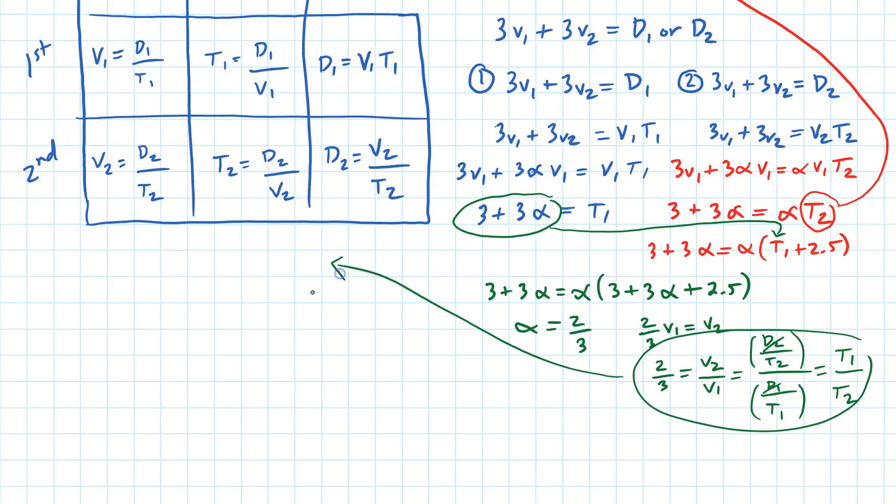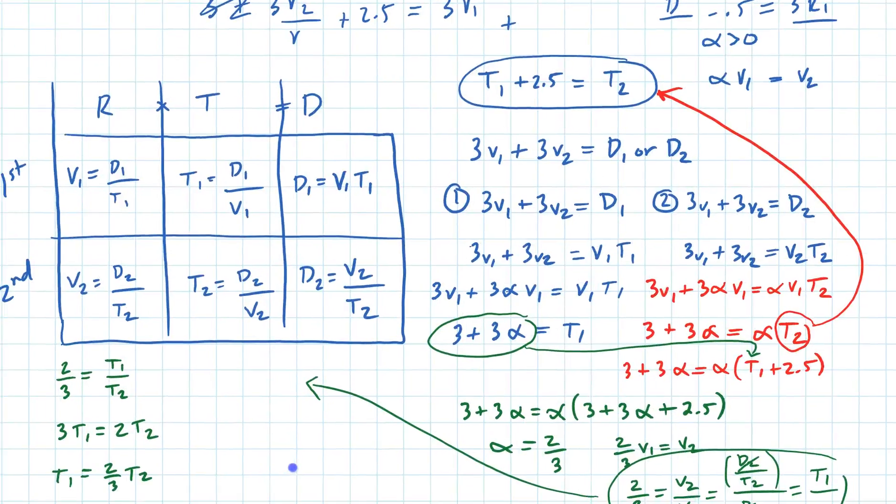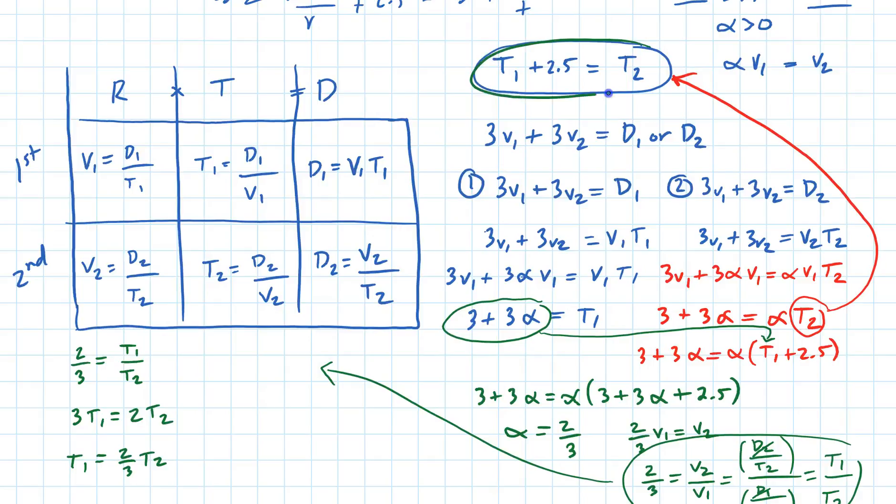So now I have two thirds equals T1 over T2. And if I solve for T1, I get T1 equals two thirds T2. And then I'm going to use this guy again.